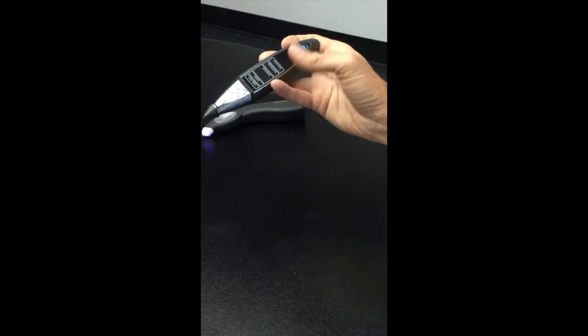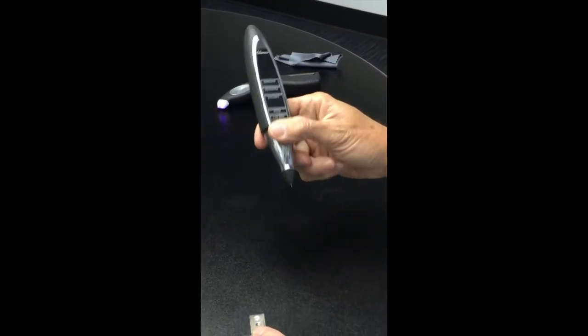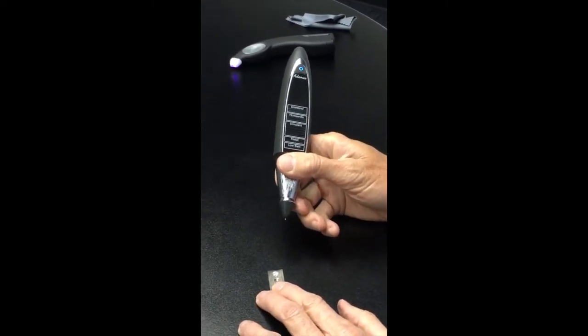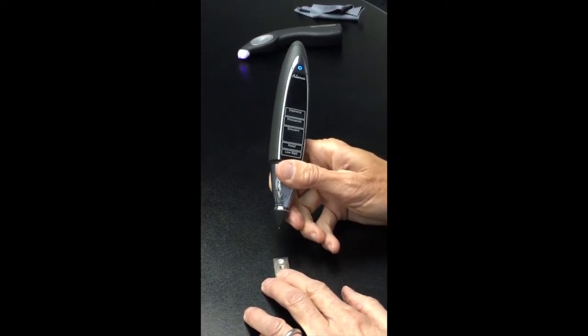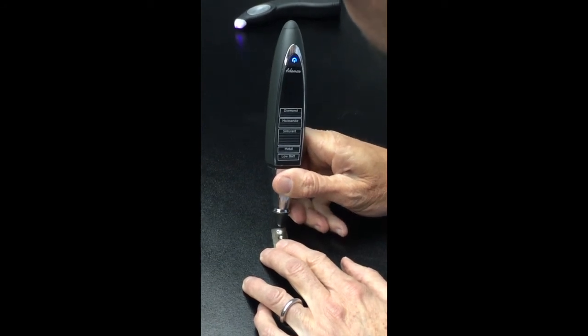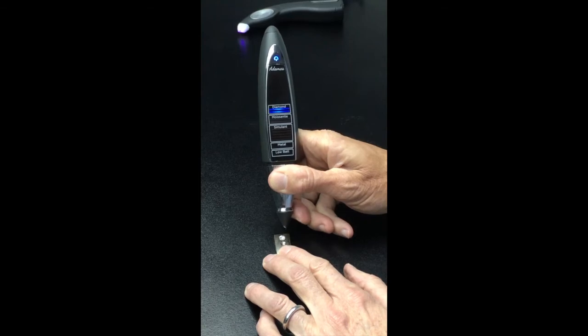Now this is the latest and greatest Adamus tester from Presidium. This overpriced tester costs $400 and as you can see, it will be fooled by this moissanite. Diamond.